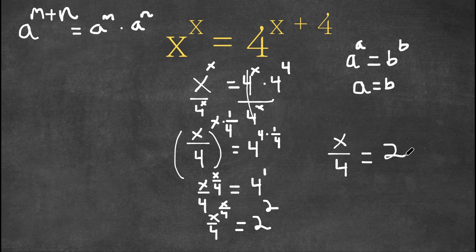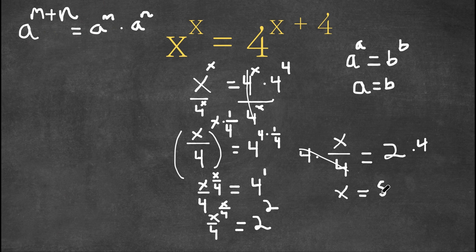And now as you can see, we have a simple equation. If we multiply both sides by 4, these two would cancel out and we would be left with x equals 2 times 4, which is 8. So our answer is x equals 8.